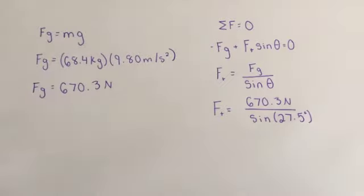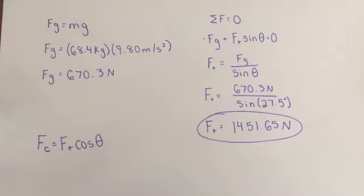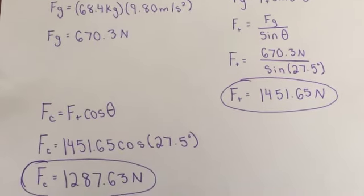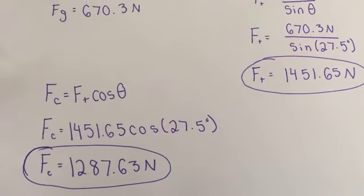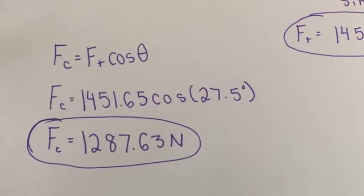Now that we have the value for the tensional force, 1451.65 Newtons, we can find the centripetal force since it is equal to the x component of the tensional force. After setting up the equations, you plug in the values we have and solve for the centripetal force. The centripetal force in this situation came out to be 1,287.63 Newtons.